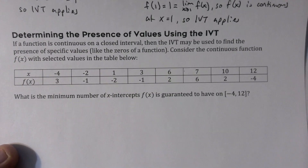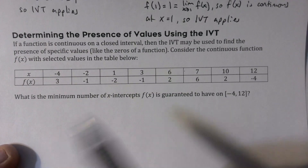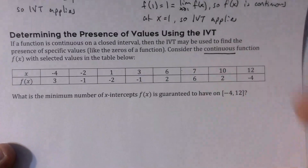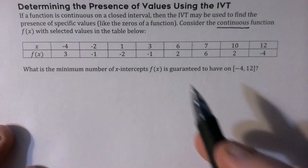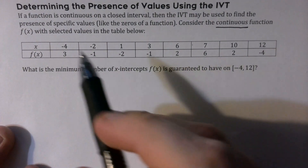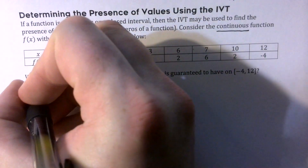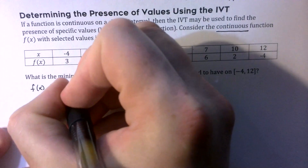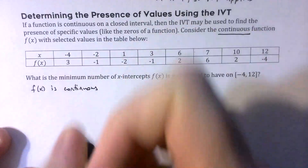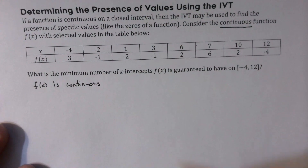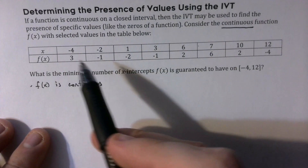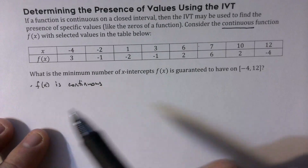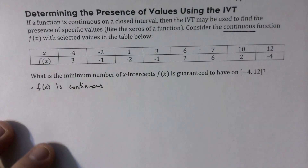If the function is continuous on a closed interval, the IVT can be used to find the presence of specific values. The most common use is finding zeros of a function. Consider a continuous function f(x) with selected values in a table. The question asks for the minimum number of x-intercepts f(x) is guaranteed to have on [−4, 12]. First, we state that f(x) is continuous. Then, if the function goes from 3 to −1 and it's continuous, it has to cross 0.